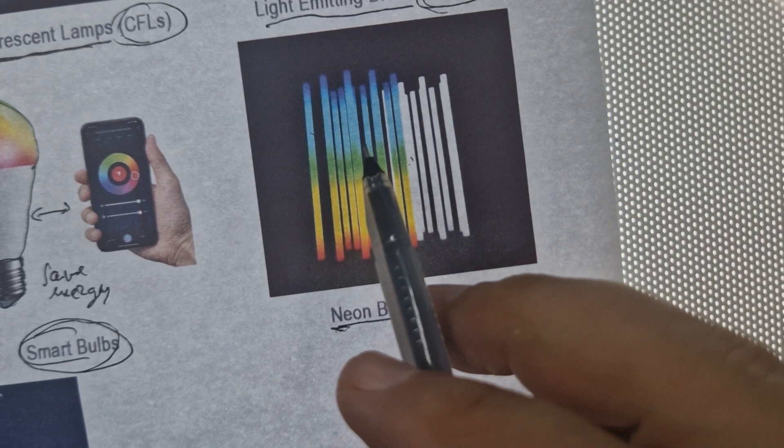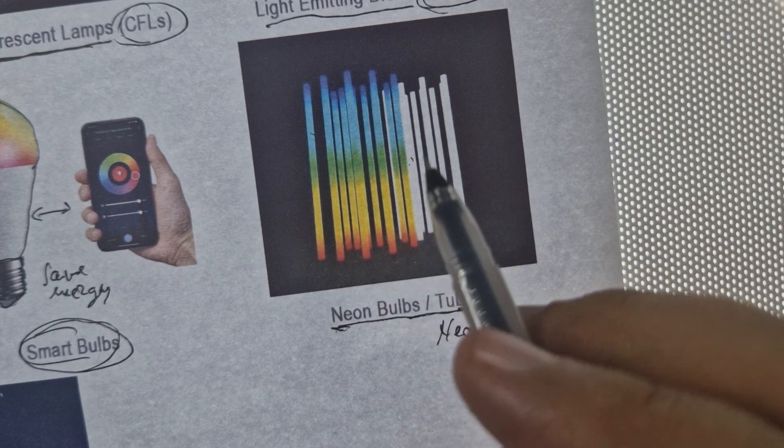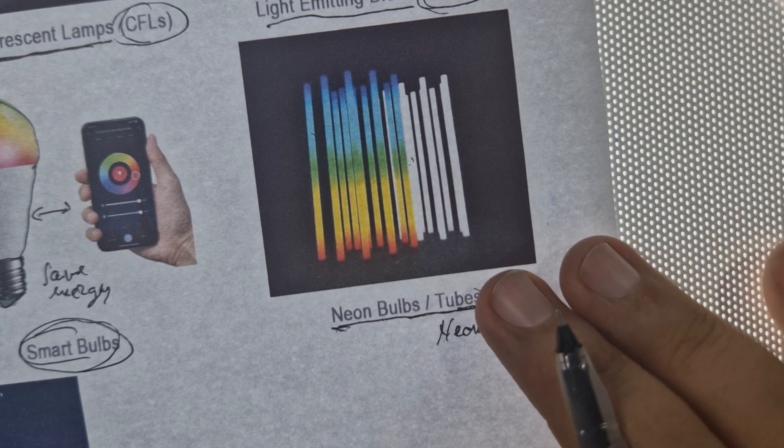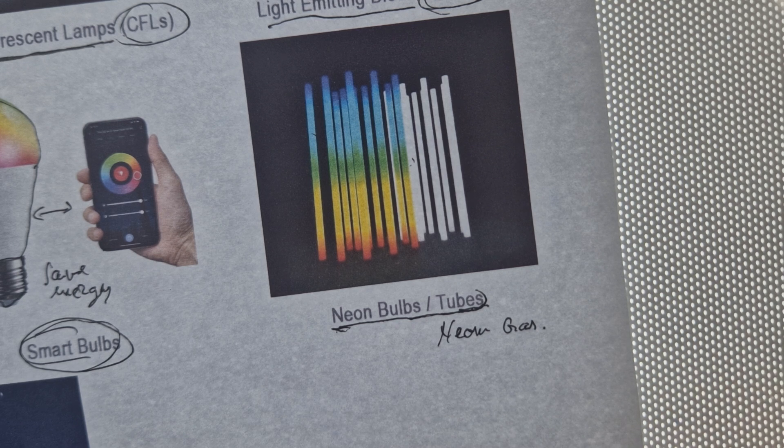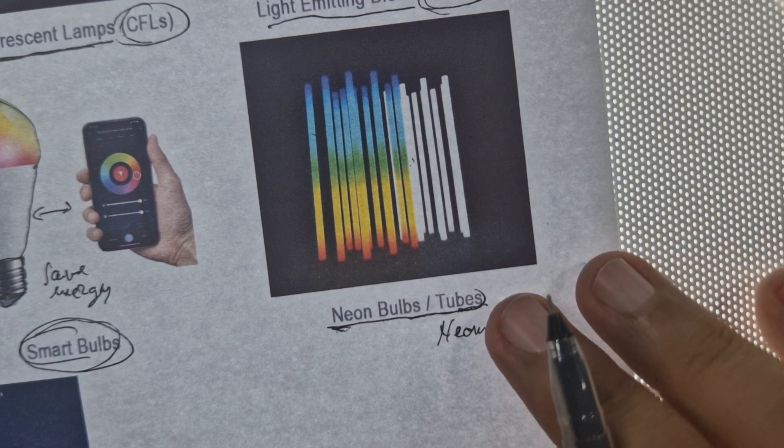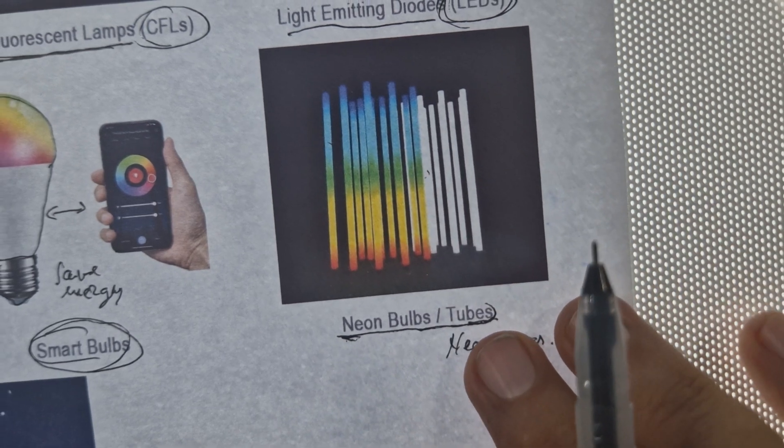Most of the advertising, when it's in light, uses neon bulbs or small neon tubes. Very tight neon and long tubes can make different kinds of shapes.